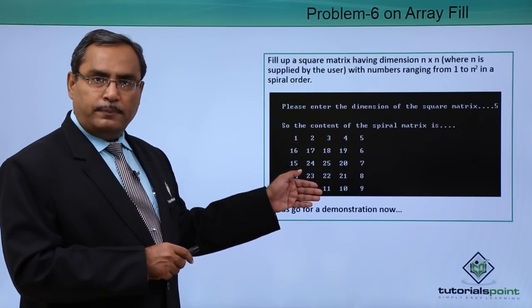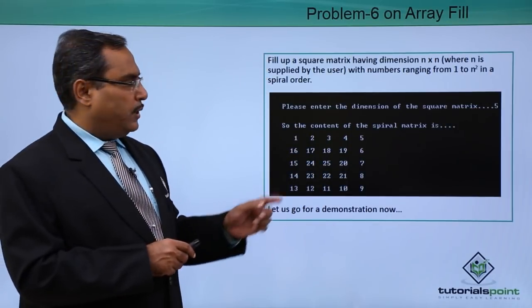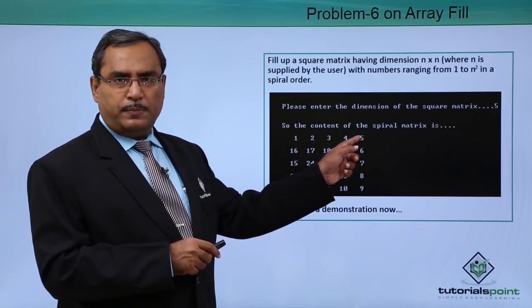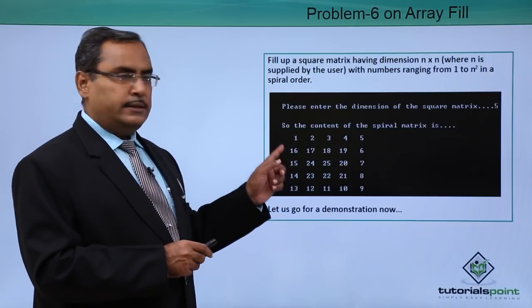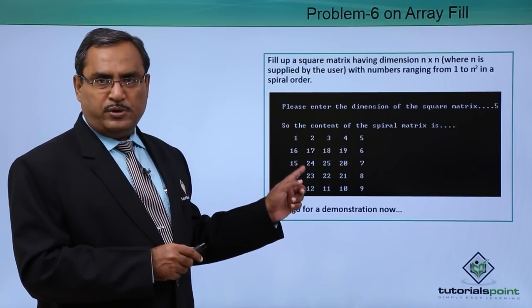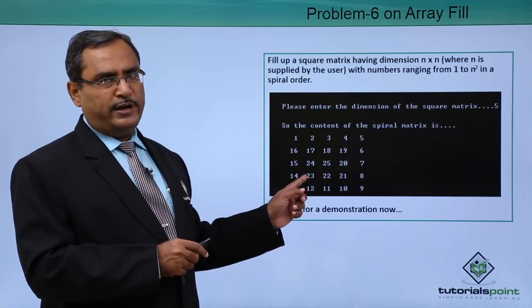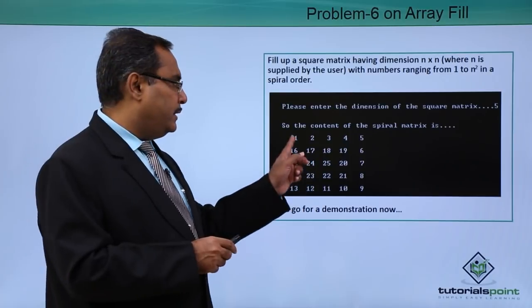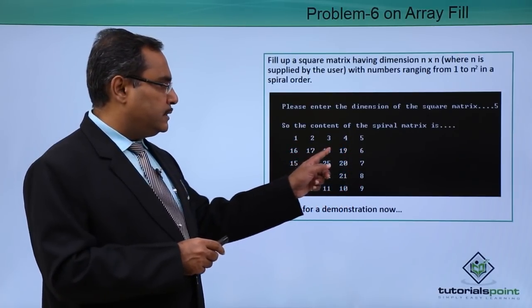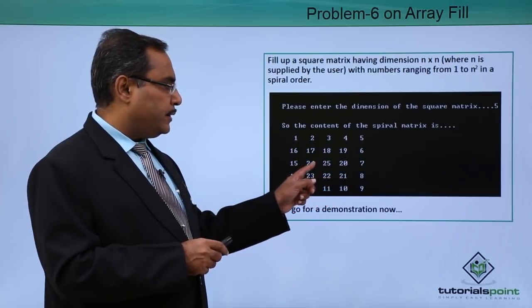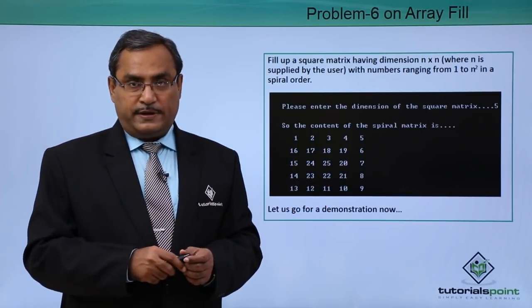This is the output of my program. If I give the value of n equal to 5, I shall be having 5 columns and 5 rows. The numbers filling this matrix range from 1 to 25 and they are filled in a spiral way — in a clockwise fashion.